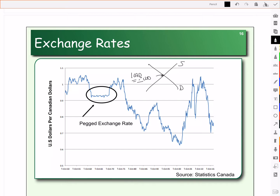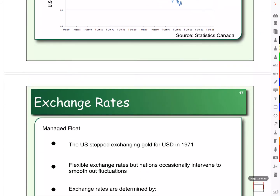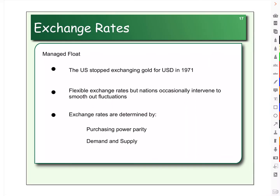So let's take a look at what determines your exchange rate. Exchange rates are determined really by two things: demand and supply. So changes in demand, changes in supply change your exchange rate, and then there's purchasing power parity.